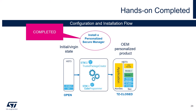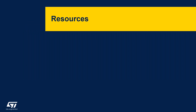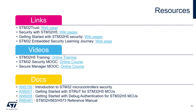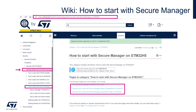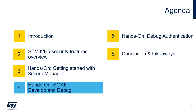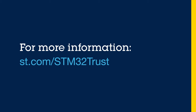We have completed our first hands-on session and in a few clicks we have installed the Secure Manager using the provisioning script. Our STM32H573 is now provisioned and in TrustZone closed state, meaning the device is still open for non-secure application development, as we are going to see in the next part 4 session. For more information on the Secure Manager and how to get started, you can find useful resources on our getting started with STM32H5 security wiki pages, under how to start with Secure Manager — three very useful wiki pages are available there. Let's move now to the next session, part 4.